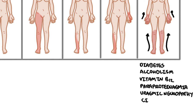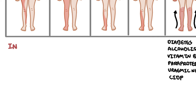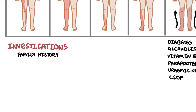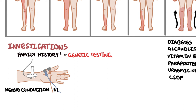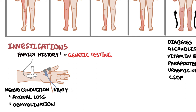Investigations and the diagnosis of Charcot-Marie-Tooth disease is really based on family history and genetic testing. You can also perform nerve conduction studies, which can either show a reduction in velocity — indicating demyelination — or a reduction in amplitude, which indicates axonal loss.